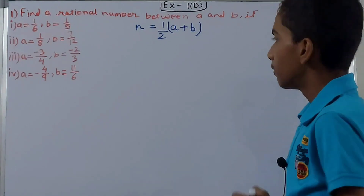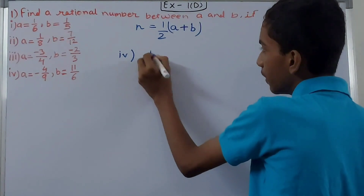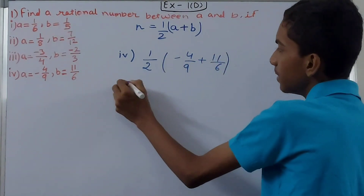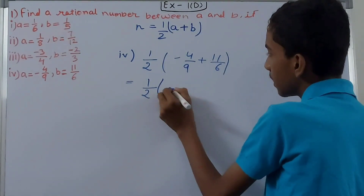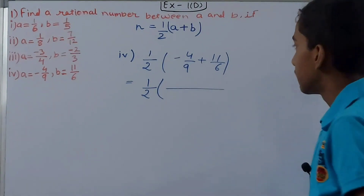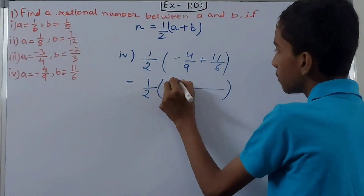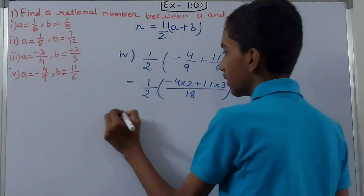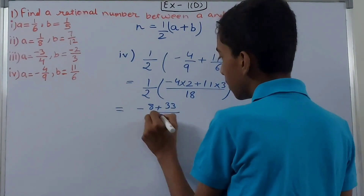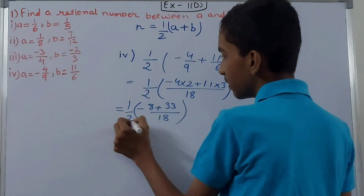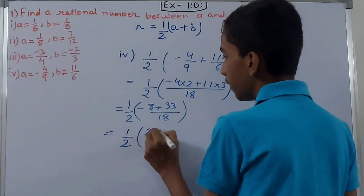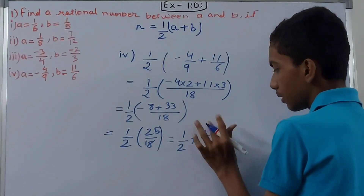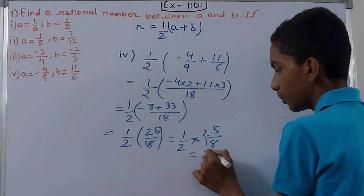For part (d), a = -4/9 and b = 11/6. Applying the formula: n = 1/2 × (-4/9 + 11/6). The LCM of 9 and 6 is 18. So -4/9 + 11/6 = (-8 + 33)/18 = 25/18. Therefore n = 1/2 × 25/18 = 25/36. The rational number between -4/9 and 11/6 is 25/36.